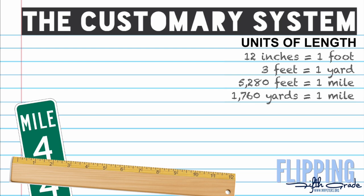When converting from larger units to smaller units we must multiply by a number. And when converting from smaller units to larger units we must divide. So let's look at what that means.